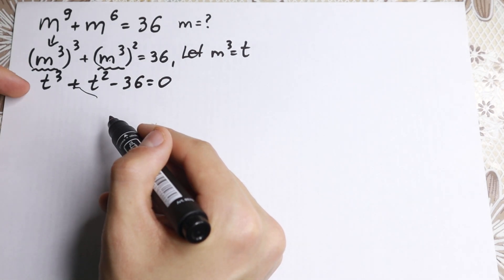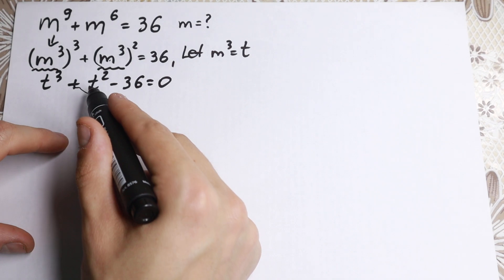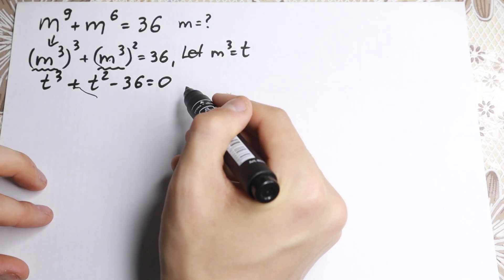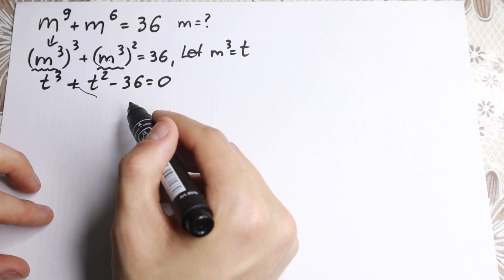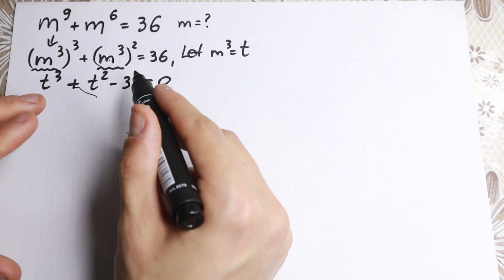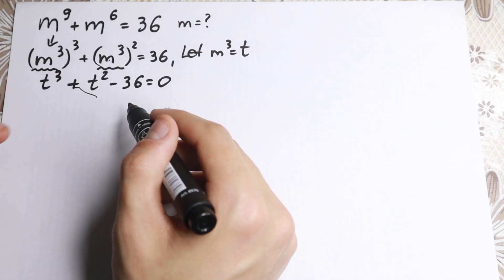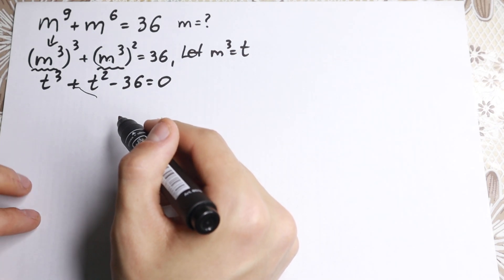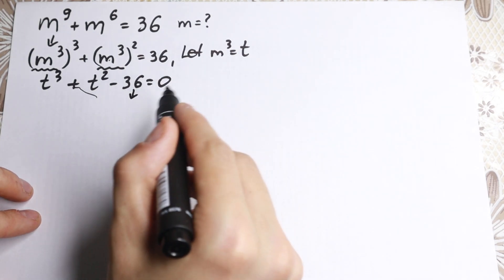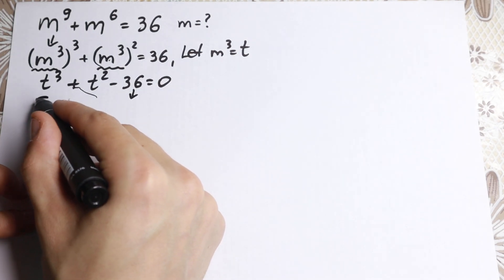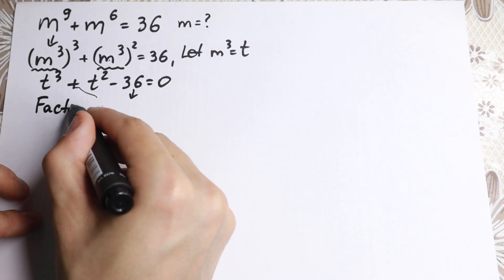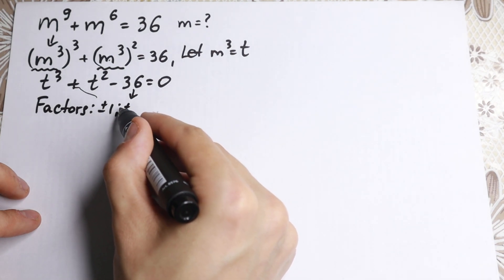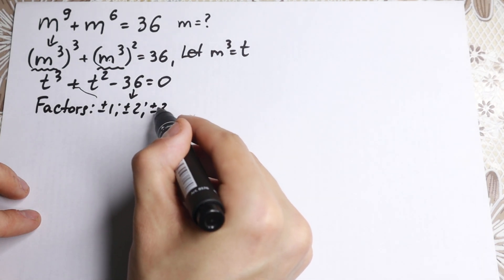Our problem gives us this cubic equation and we need to solve it. When we solve for t, we'll plug back in to find m. My approach: I find the factors of 36. The main obvious ones are ±1, ±2, ±3, and more. Let's start from the beginning.